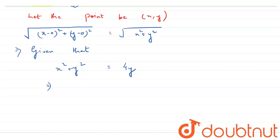And from here, we can say that the equation of locus is this. So, x square plus y square minus 4y is our answer. Thank you.